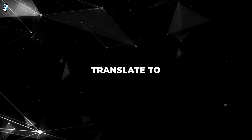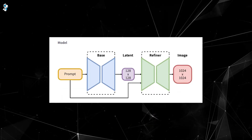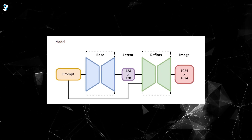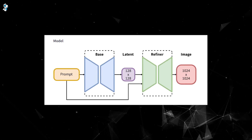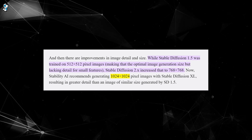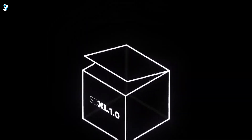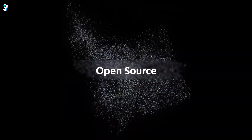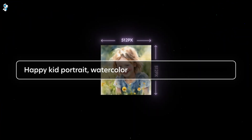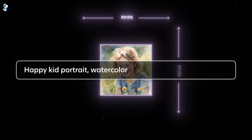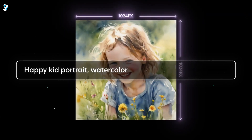So what does all this translate to for users? First off, SDXL can generate images at 1024x1024 resolution right off the bat, whereas the original SD 1.5 maxes out at 512x512. Being able to produce high-resolution images without needing to upscale is a huge upgrade — it means way more detail and fidelity to your prompts out of the box. SDXL also has improved fine-tuning capabilities.